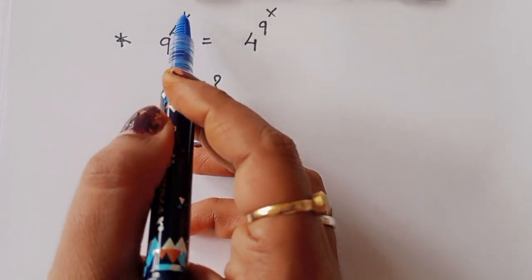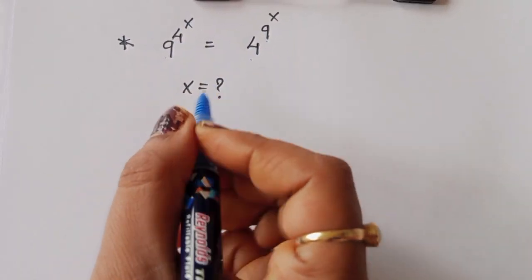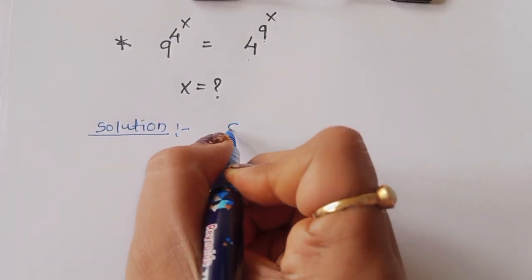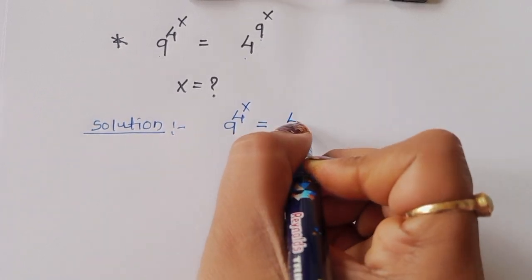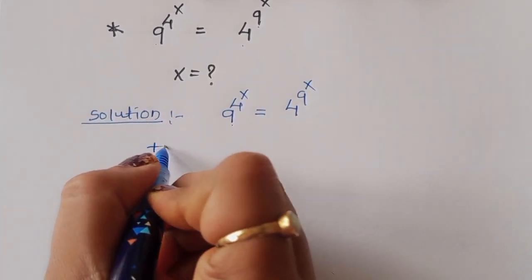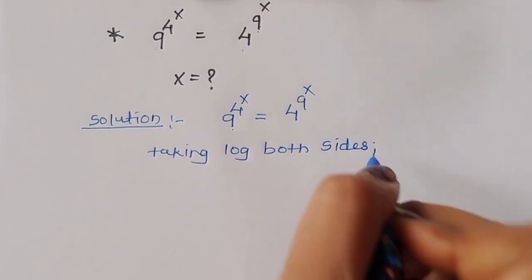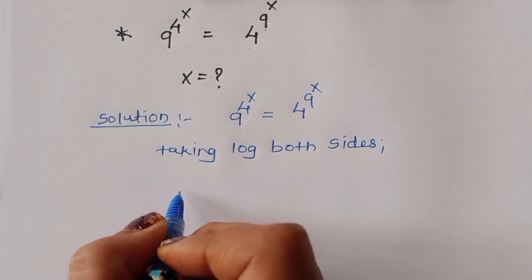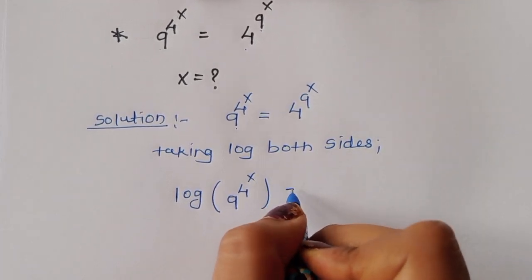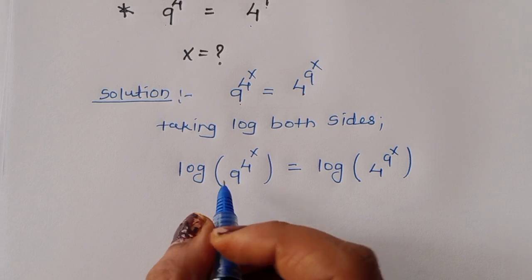The question is: given 9 power 4 power x is equal to 4 power 9 power x, we have to find out the value of x. Let's see the solution. Taking log both sides: log of 9 power 4 power x is equal to log of 4 power 9 power x.